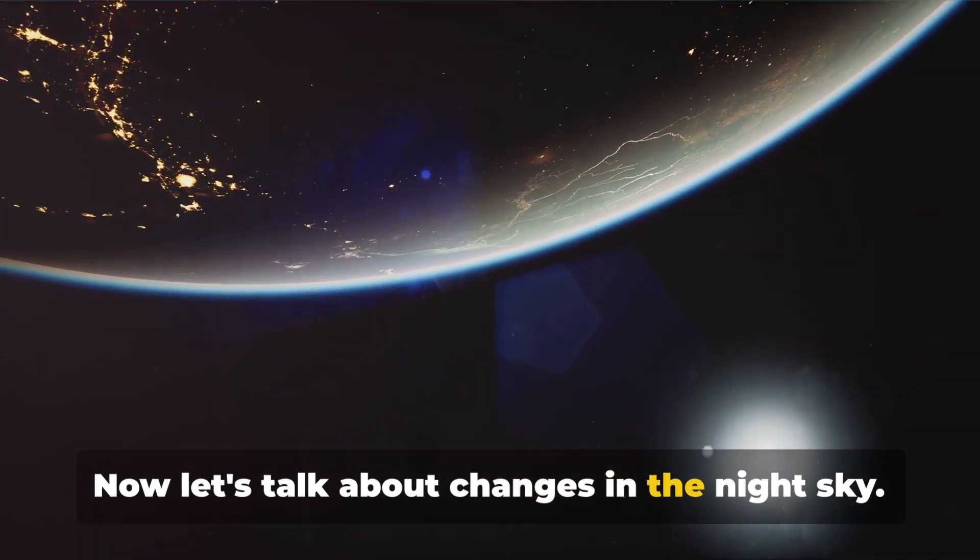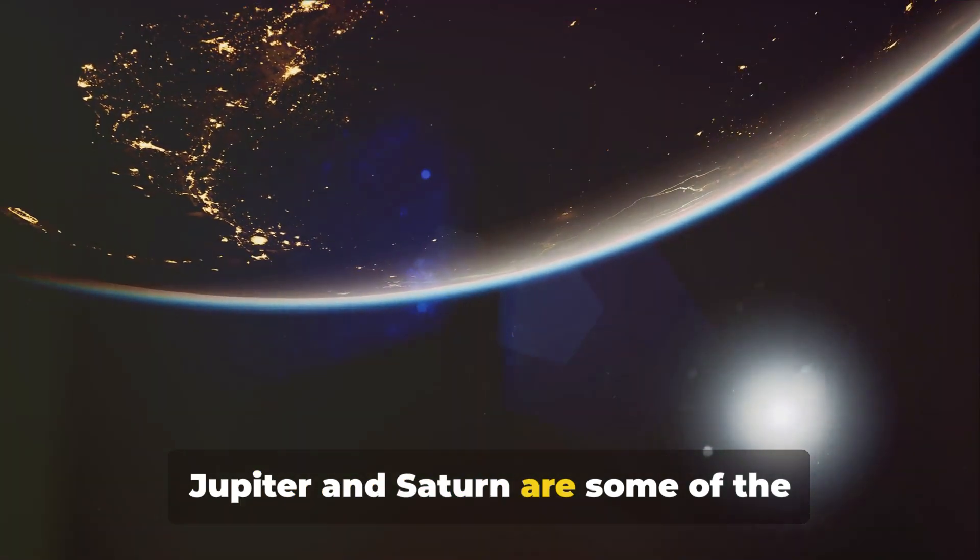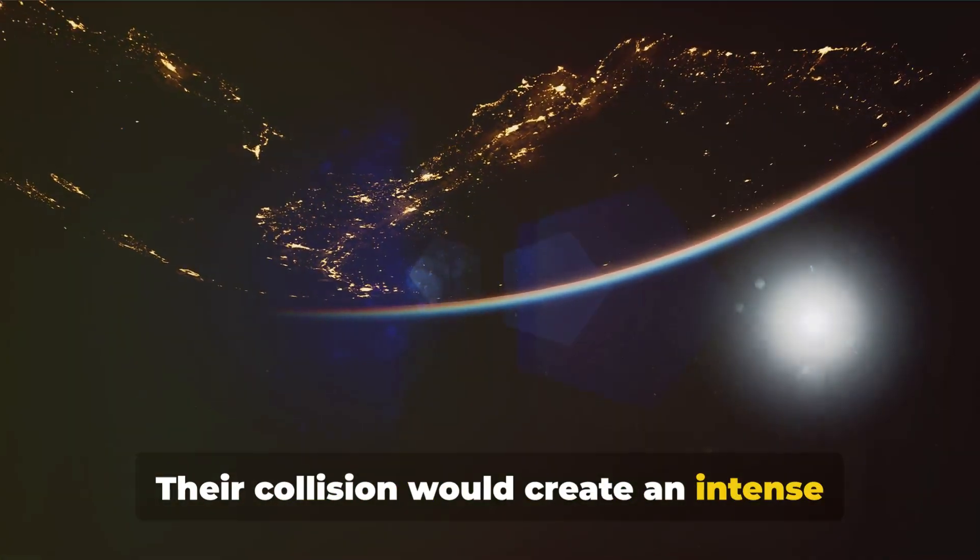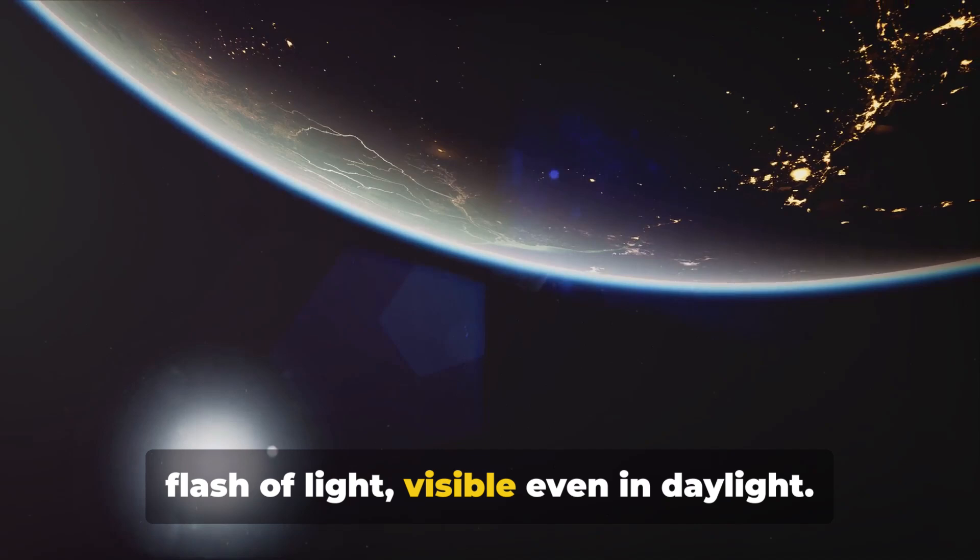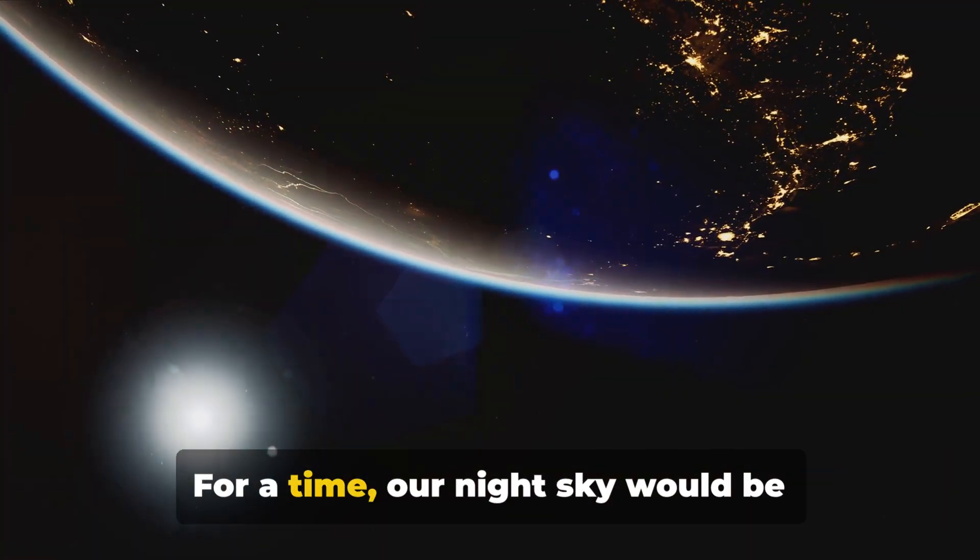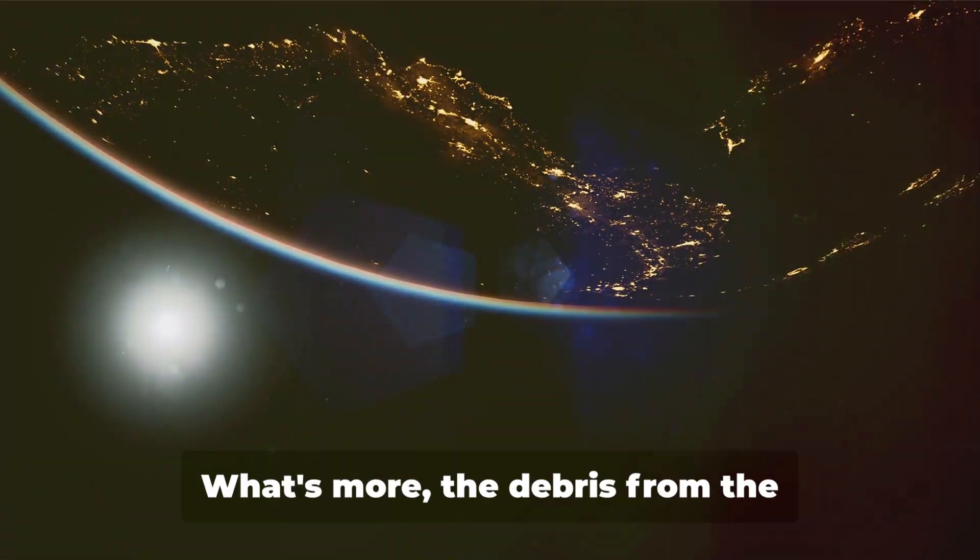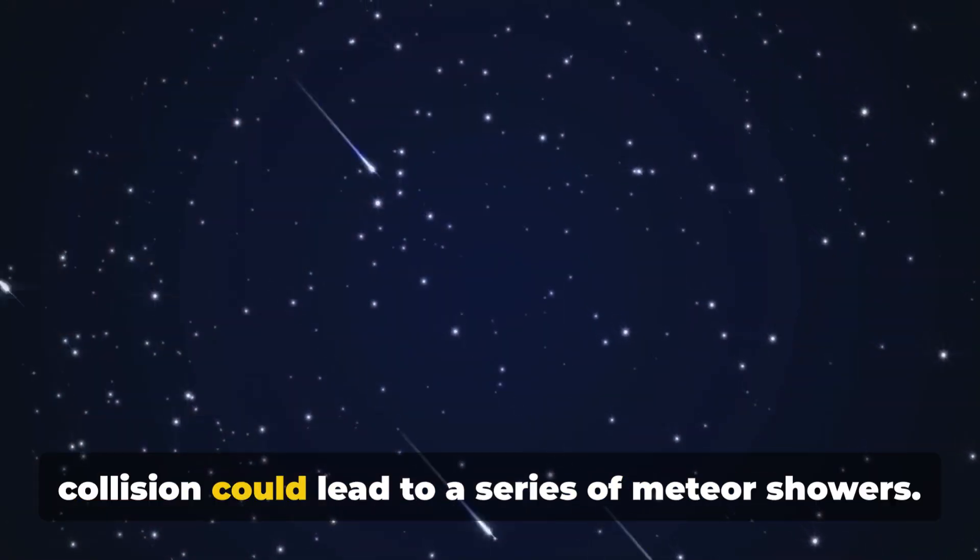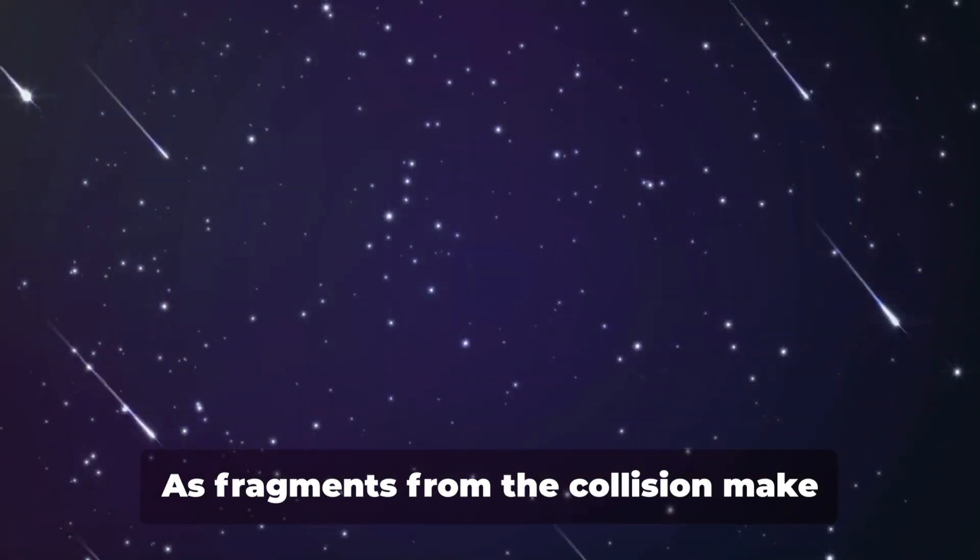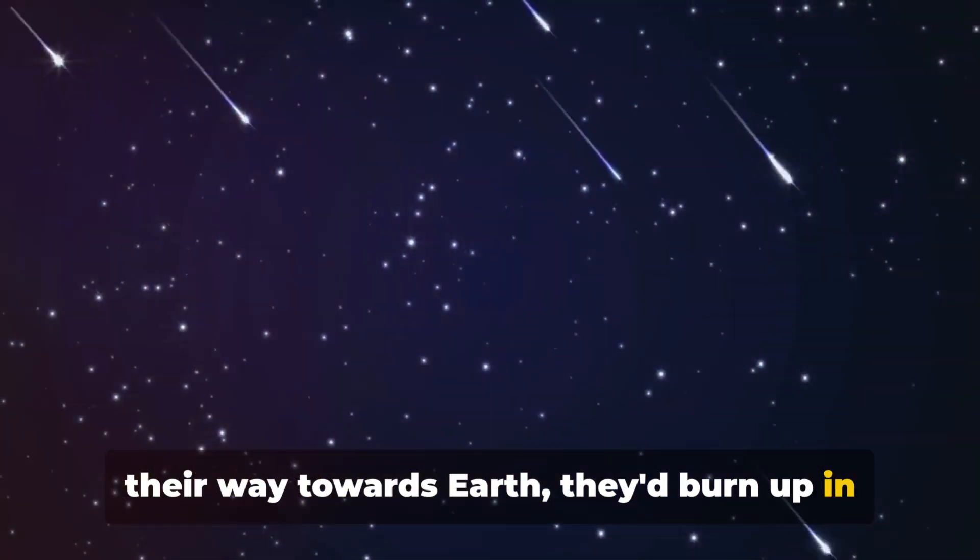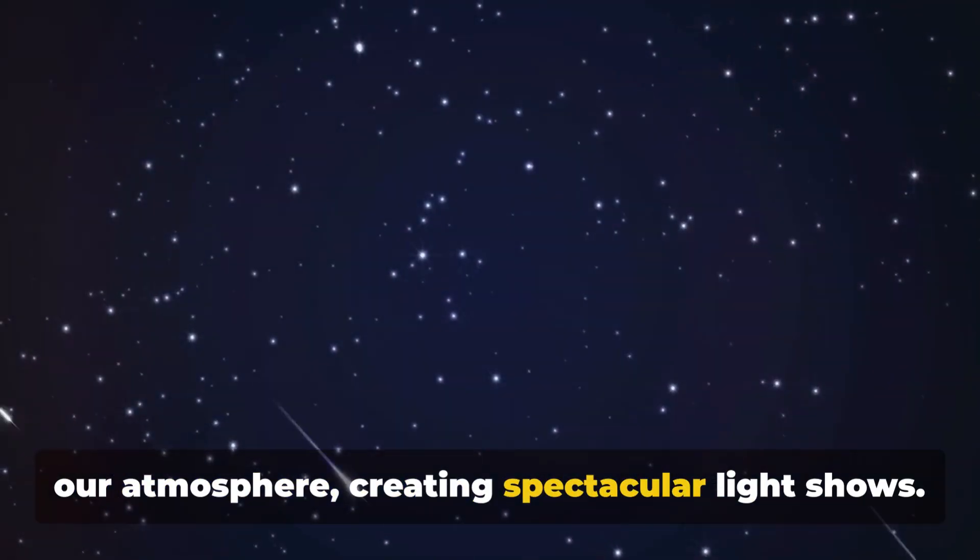Now let's talk about changes in the night sky. Jupiter and Saturn are some of the brightest objects we can see. Their collision would create an intense flash of light, visible even in daylight. For a time, our night sky would be transformed, the new planet shining like a second sun. What's more, the debris from the collision could lead to a series of meteor showers. As fragments from the collision make their way towards Earth, they'd burn up in our atmosphere, creating spectacular light shows.